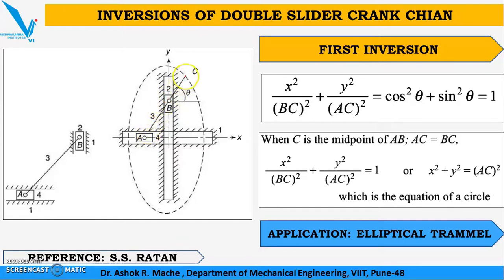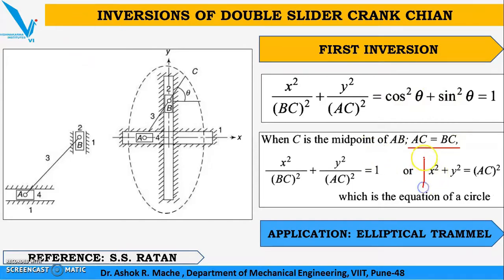If you extend link AB to get point C, you can obtain the equation: x² / BC² + y² / SC² = 1, by simple geometric relations. This is the equation for an ellipse, and point C will trace an ellipse when we apply angular rotation to link number 3. When point C is the midpoint of A and B, then AC equals BC, and this equation reduces to the equation of a circle — meaning point C will trace exactly a circle.